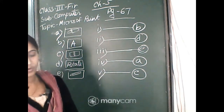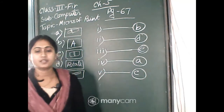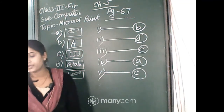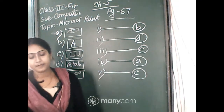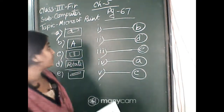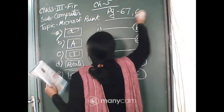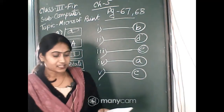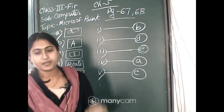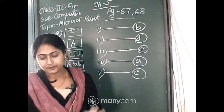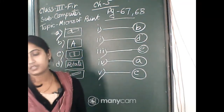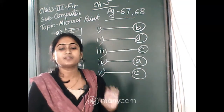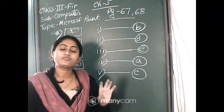I will now discuss opaque and transparent in Paint. Open page 68. By default in MS Paint, the background color of the text box is transparent. To change the background color of the text box — if you want to write any message in the drawing area, you have to use a text box, and inside it you can write a message.